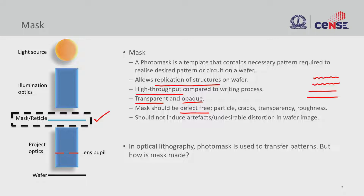We also do not want any artifact or undesirable distortion transferred from the mask onto the wafer. There can be multiple artifacts — structures that are undesirable sitting there, not developed properly, with no precise edges defined. These will create undesirable distortion on the image. In optical lithography, a photo mask is used to transfer the pattern, and understanding how we make this mask and its properties is the topic for this lecture.